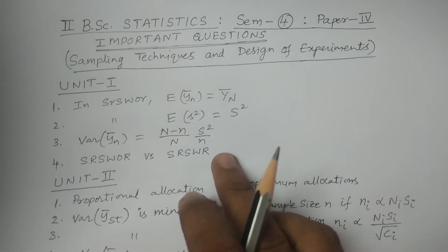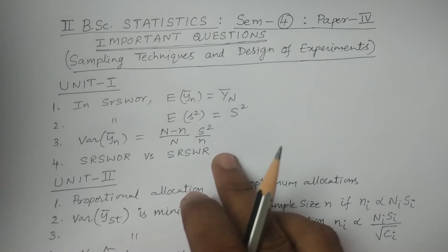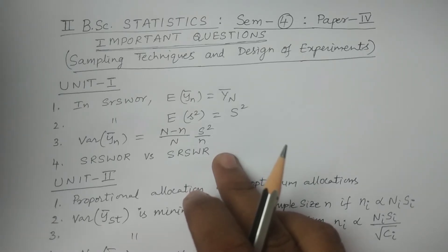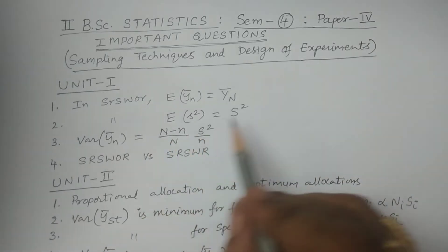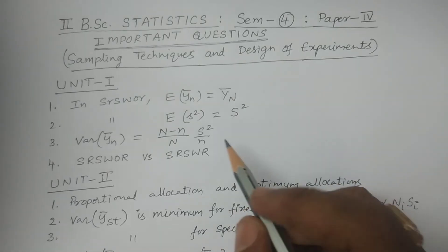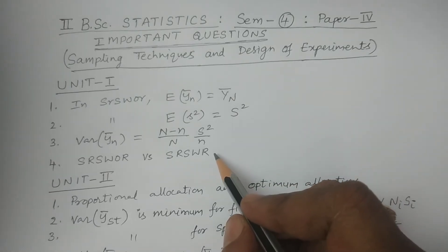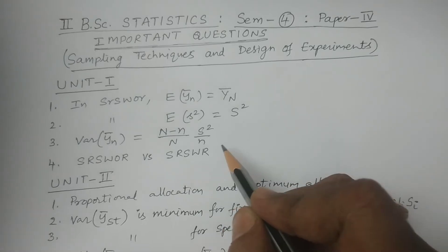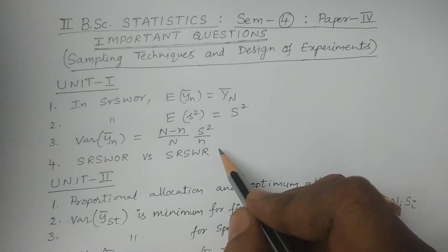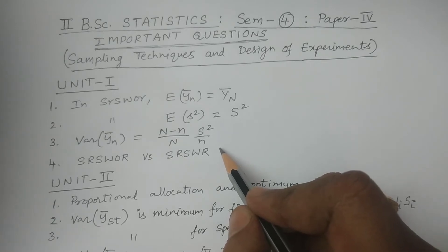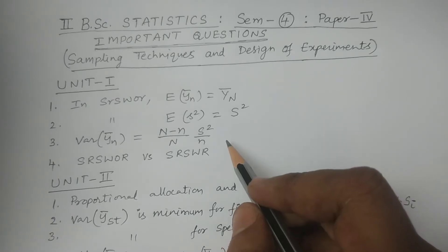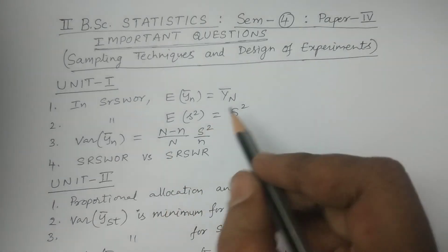And minimum 5 marks in the section below — these are short questions. That's why we have to take advantage of it. The first one: Simple random sampling definition, with replacement and without replacement. You are learning techniques — the lottery method and random number tables method. These are important questions.